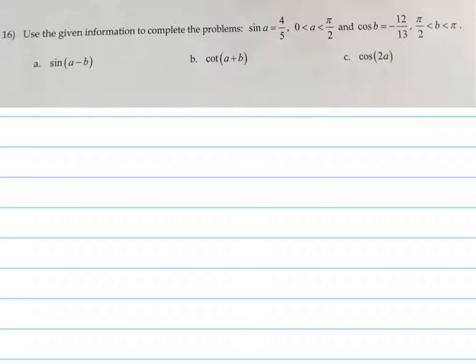Here's a trig problem that says use the given information and complete the problem. We want to find the sine of A minus B. So there's formulas for this, and there's identities for the sine of A minus B.